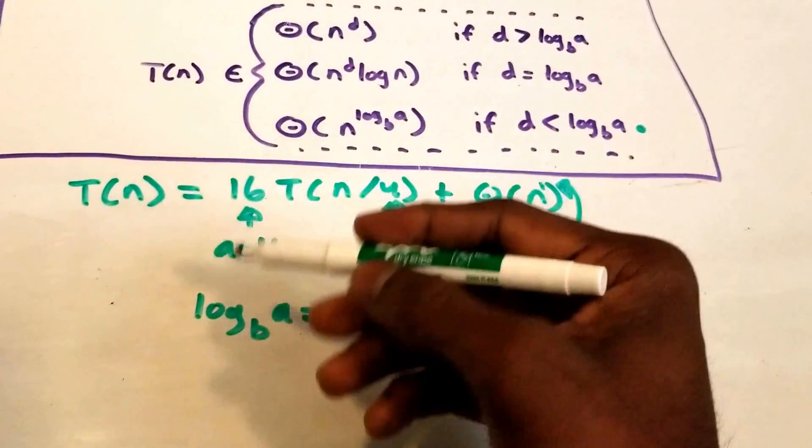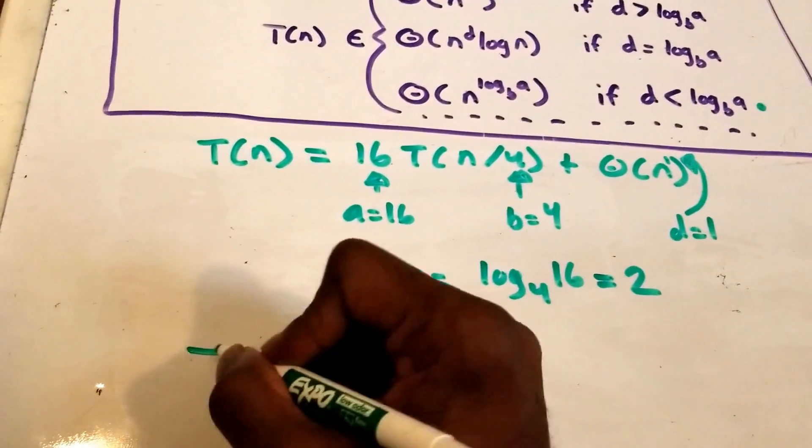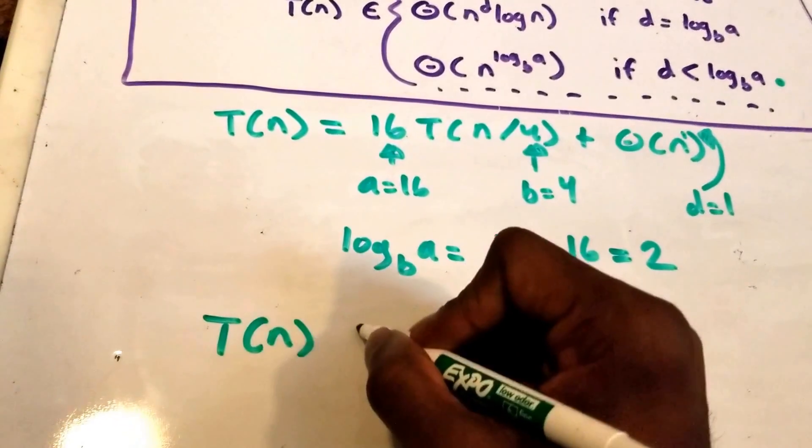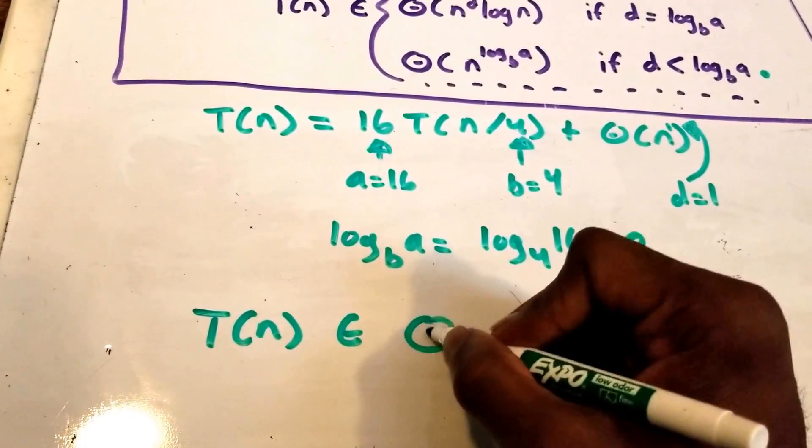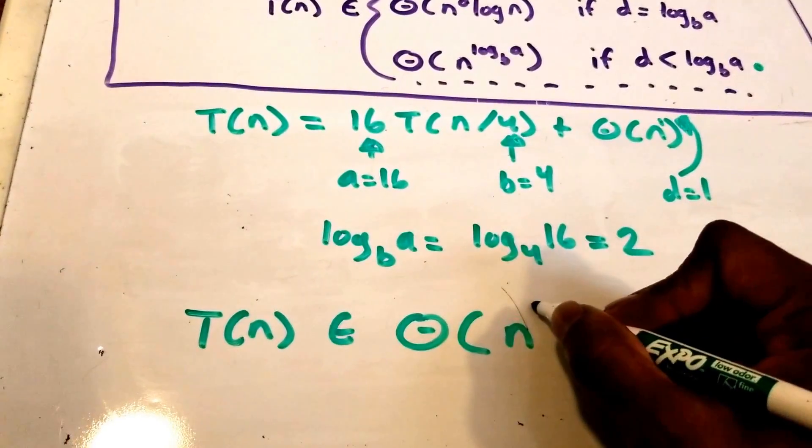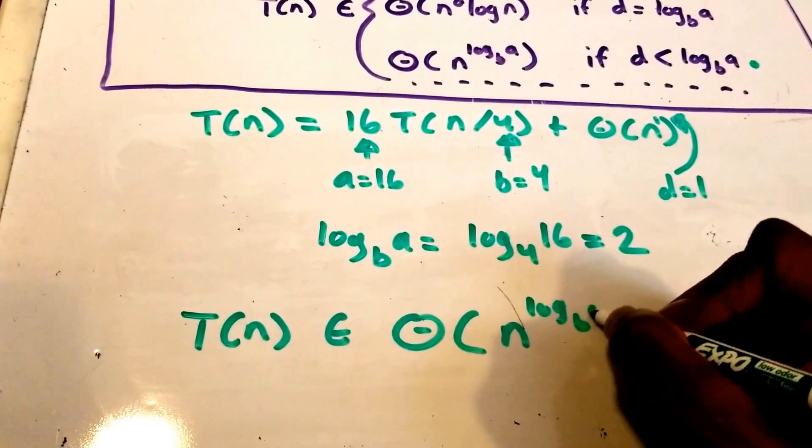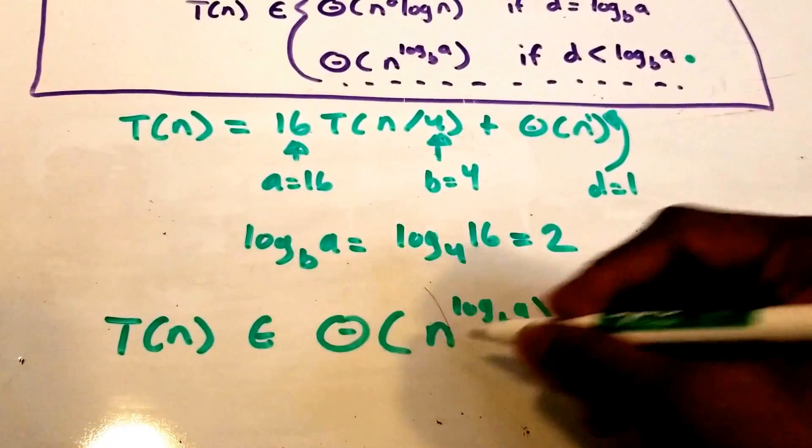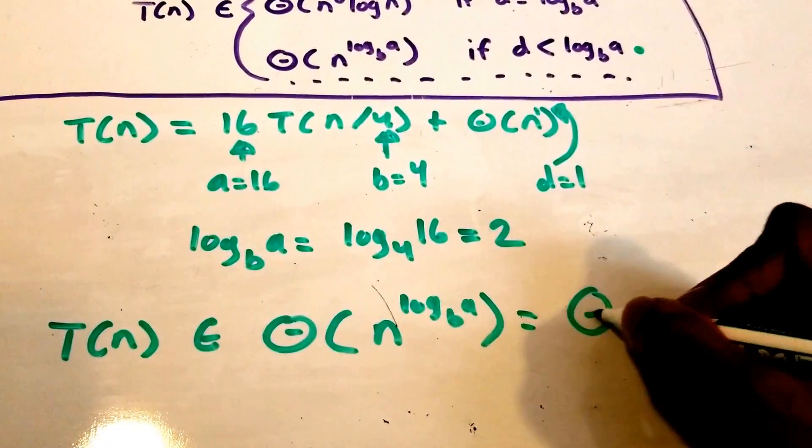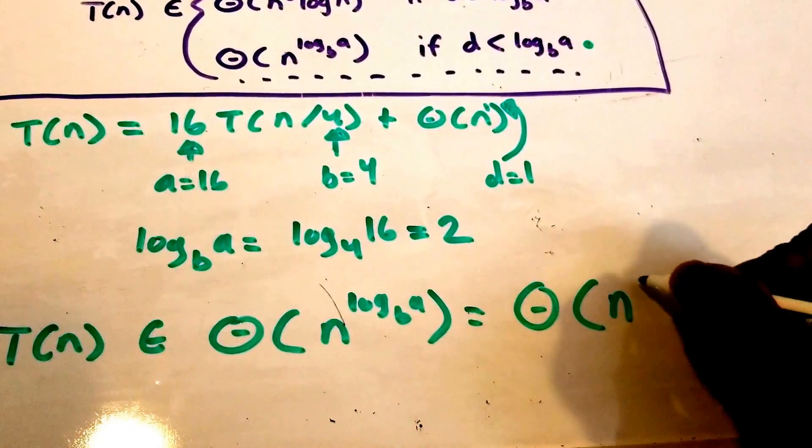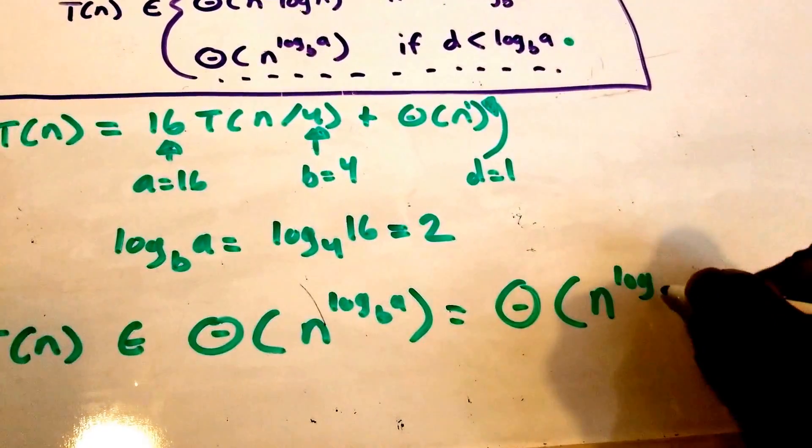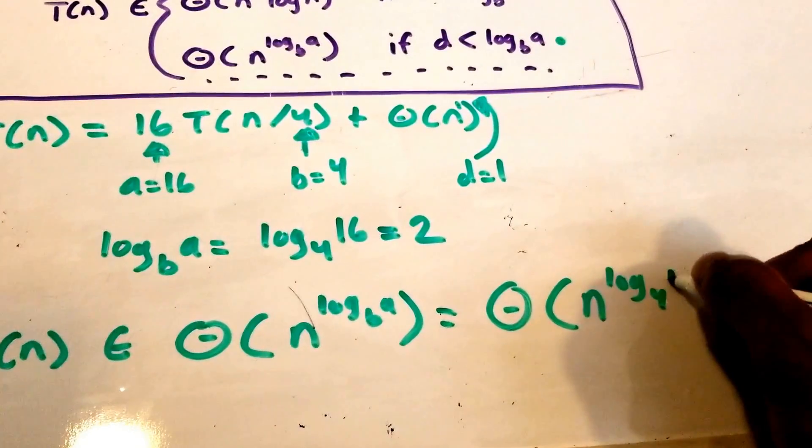So that means we're going to use this third case and that third case tells us that our T of n belongs to big theta of n to the power of log base b of a and that's just equal to big theta of n to the power of log base 4 of 16.